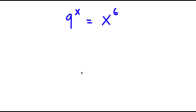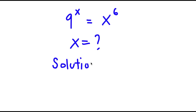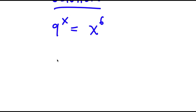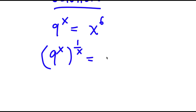In this problem, I have 9 to the power of x is equal to x to the power of 6. I'm going to find the value of x. For my solution, I'll start with 9 to the power of x is equal to x to the power of 6, and I'm actually going to take the power of 1 over x on both sides. So now I have 9 to the power of x to the power of 1 over x is equal to x to the power of 6 to the power of 1 over x.